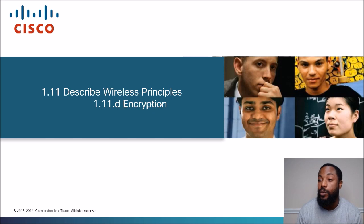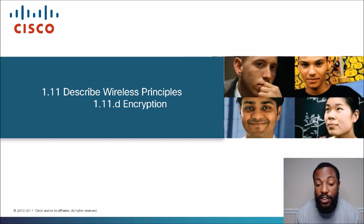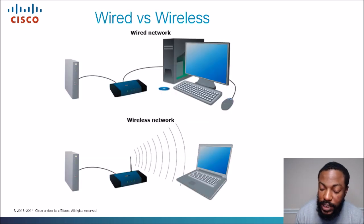Basically, encryption is a way of taking your data, masking it and hiding it so that way people can't read it and hack your systems. Before we talk about why encryption is important, let's talk about the difference between wired and wireless networks.